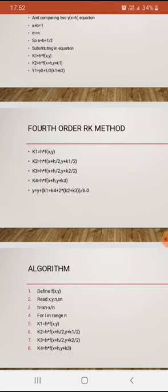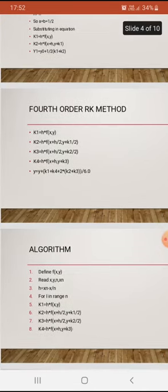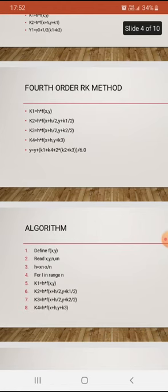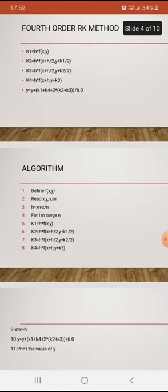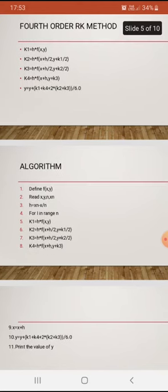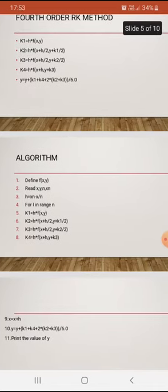Next we discuss the steps of the program represented by the algorithm. First we define f(x, y), then read x, y, and x_n. We also have h = (x_n - x) / n. In this question, h is given as 0.25, so we can substitute it into the equation.